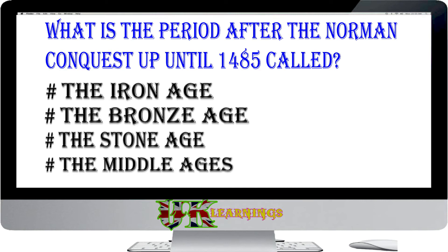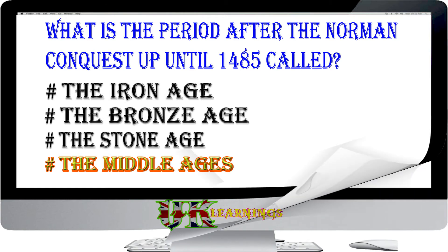What is the period after the Norman Conquest up until 1485 called? The Iron Age, the Bronze Age, the Stone Age, the Middle Ages. The answer is the Middle Ages. The period after the Norman Conquest up until about 1485 is called the Middle Ages, or the Medieval period. It was a time of almost constant war.